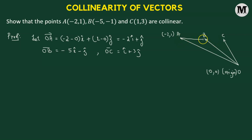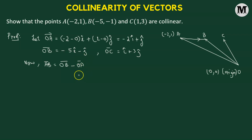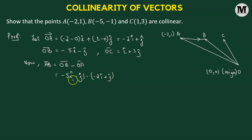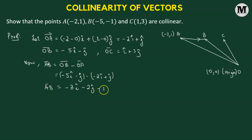Now we'll join point A and point B with a vector going from A to B, and find vector AB. AB vector is defined by taking the position vector of the endpoint, which is OB vector, and subtracting the position vector of the initial point, OA. So OB vector is negative five i-cap minus j-cap, and we subtract OA vector, which is negative two i-cap plus j-cap. Combining like terms: negative five i-cap minus negative two i-cap gives negative three i-cap, and negative j-cap minus j-cap gives negative two j-cap. So vector AB equals negative three i-cap minus two j-cap. We label this as equation one.